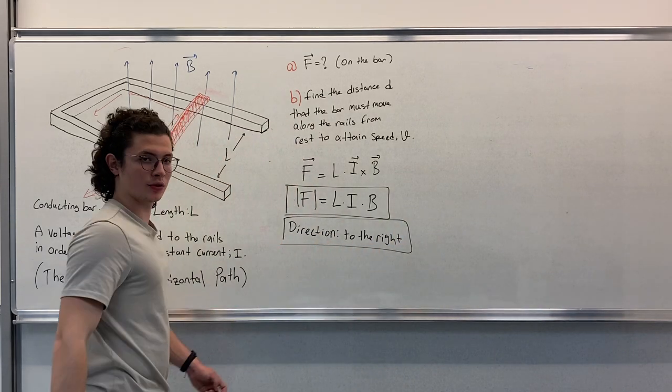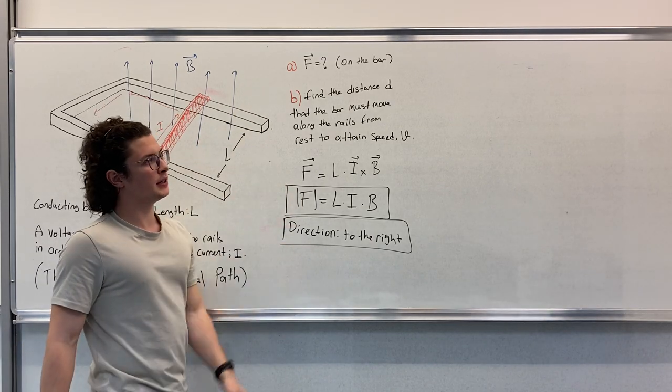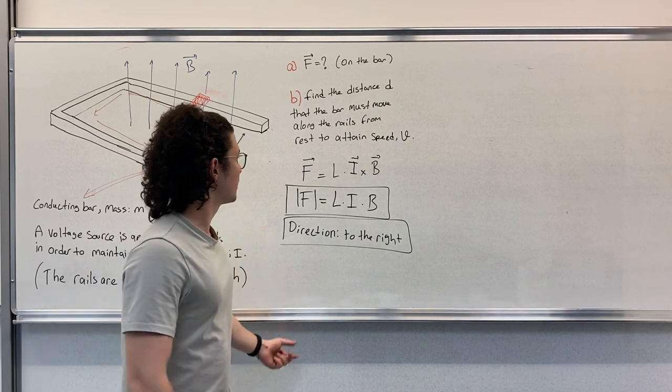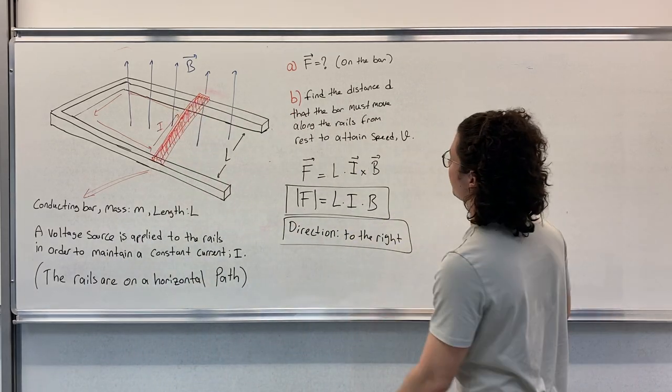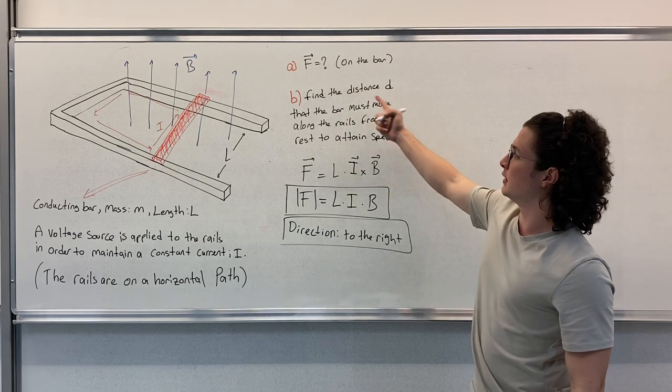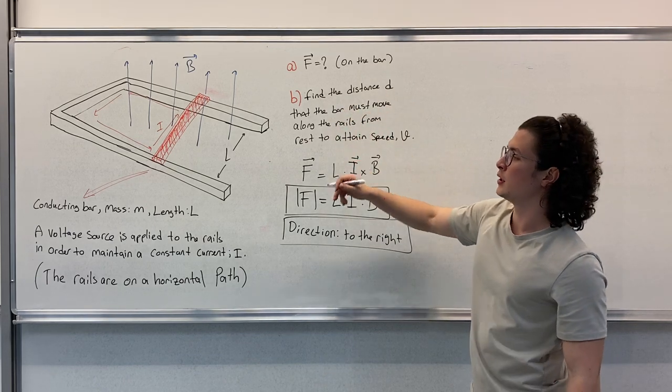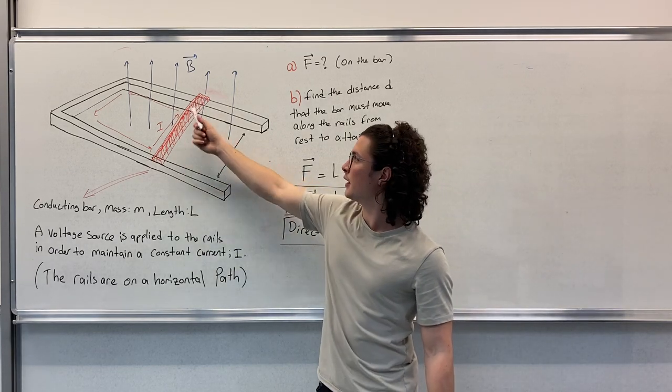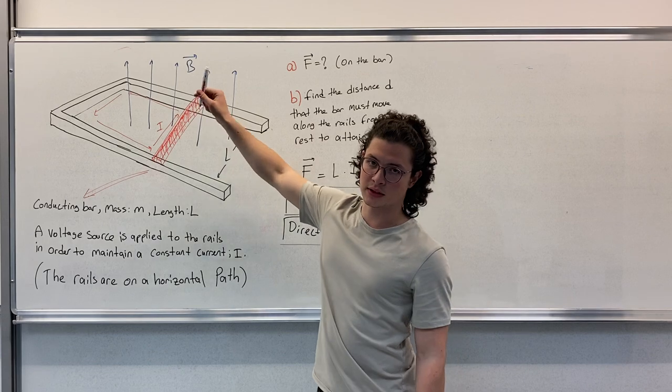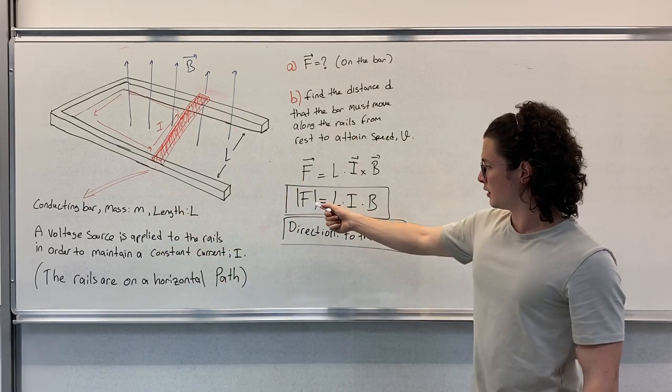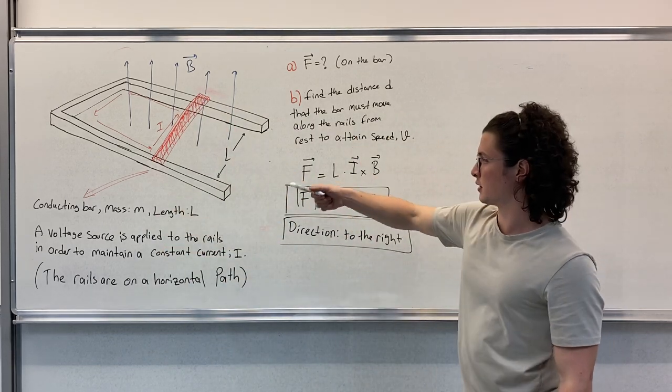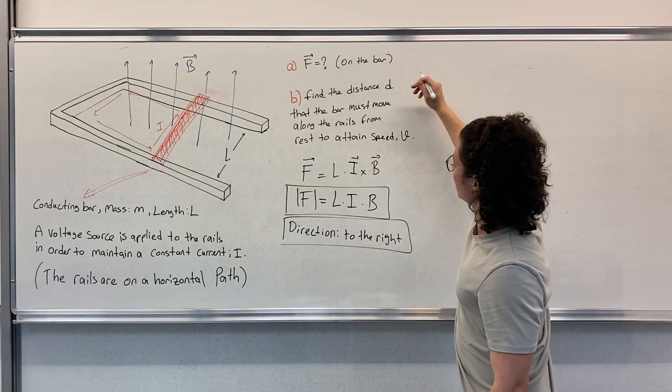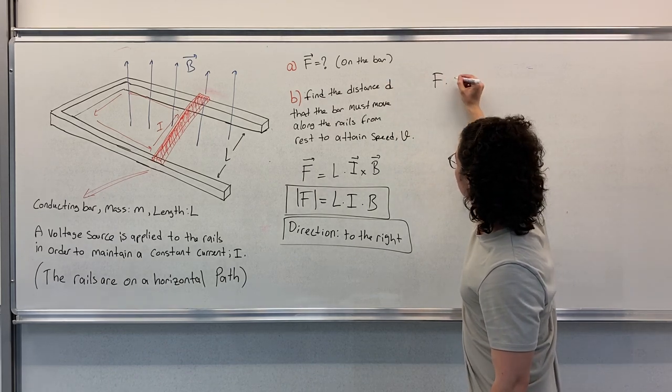This is our answer for part A. For part B, we'll use the work-energy equivalence to find the distance D that the bar must move. We know that we have a constant current I and constant magnetic field, therefore our force acting on this bar is also constant. So we write F times D.